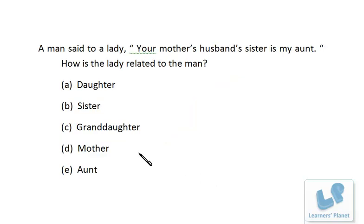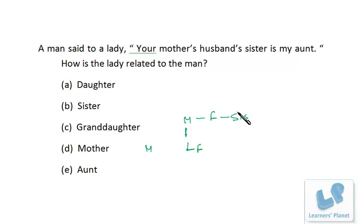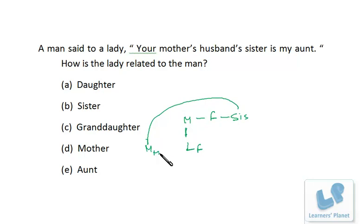Next question: A man said to a lady — the man is here, telling the lady (L, female) — your mother's husband means her father, same generation. His sister is aunt, so these two are aunt and nephew. Since the man is male, these two — the man and the lady — are one generation apart with the same relationship level, making them brother and sister. So the lady is the man's sister.